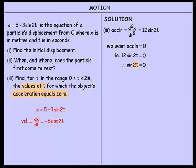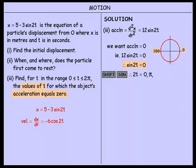We want 2t by itself, so we use shift sine. Using our diagram we get 0 degrees as our first answer, so 2t equals 0. We check the opposite on the diagram — opposite 0 is 180, and the sine of 180 also equals 0, so that is a valid answer, written as π. Also, 0 degrees is the same as 360 degrees, which is 2π. The pattern continues: 0, π, 2π, 3π, 4π, 5π, etc.